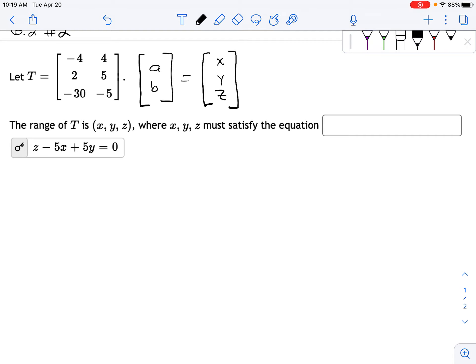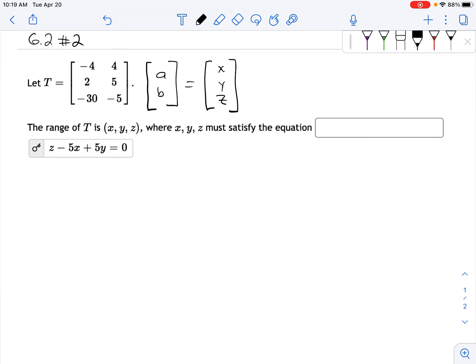something from R2, and it gives you a vector in R3. So we're trying to figure out what is this x, y, and z, what do they have to satisfy in order to be the range? So we're just taking this,